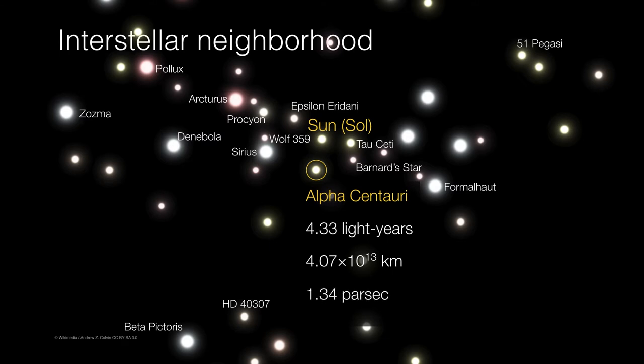Now I'd like to introduce a new term of distance that we often use in astronomy to indicate the distances between stars. This is called the parsec. Later on we'll learn how we define a parsec, but for now it's enough to know that a parsec is equal to about three and a quarter light years.